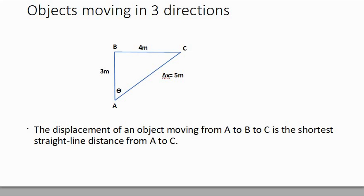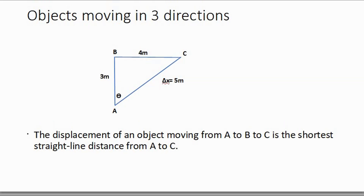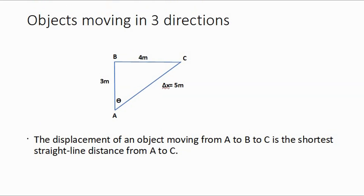Let's take an object that moves in three directions, so we can have a triangle with an angle theta, three positions: A, B, and C. The displacement from A to B is three meters, B to C is four meters, and delta x from A to C — so delta x would be your displacement — is five meters.